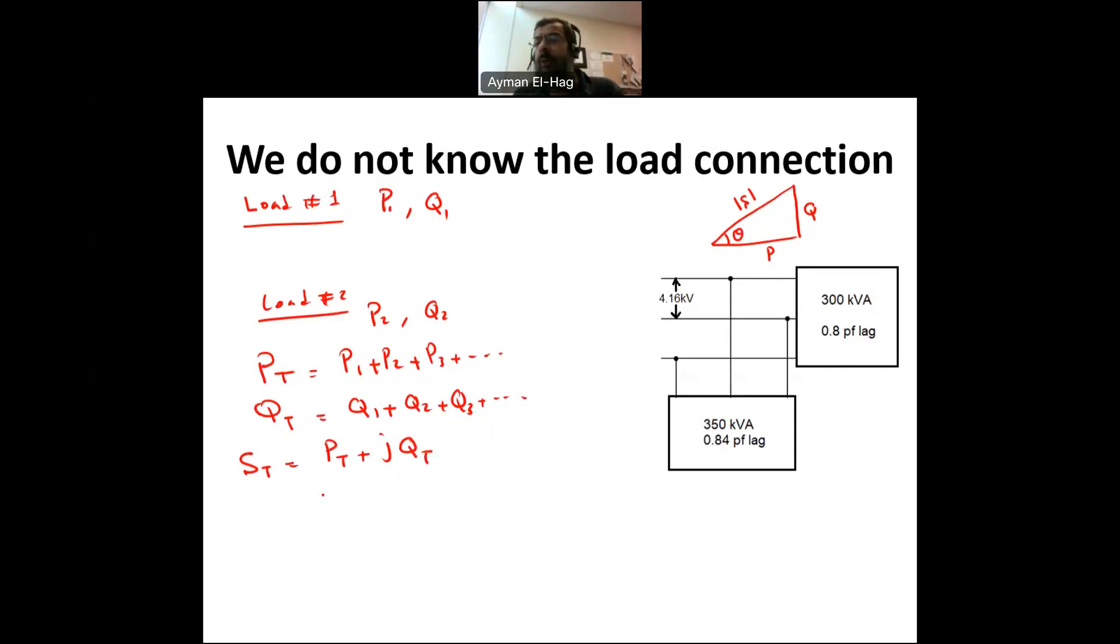For example, if you are asked what is the power factor of this combined loads, so we know that tan theta total is equal to Q total over P total. And from this, you can find the cosine of theta total, which is tan inverse of Q total over P total.